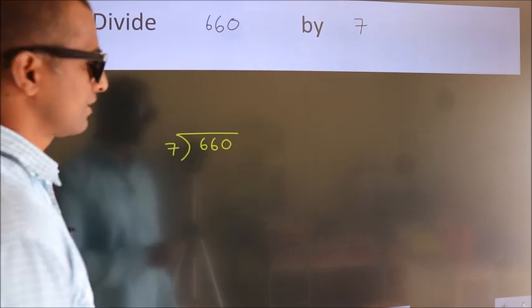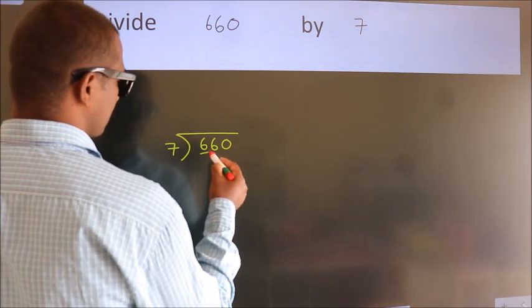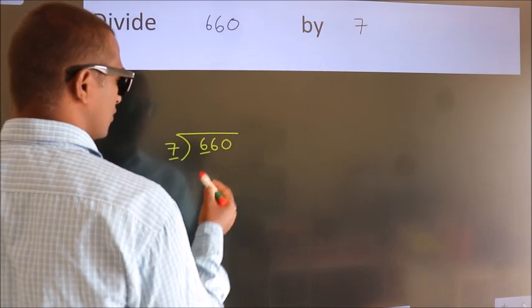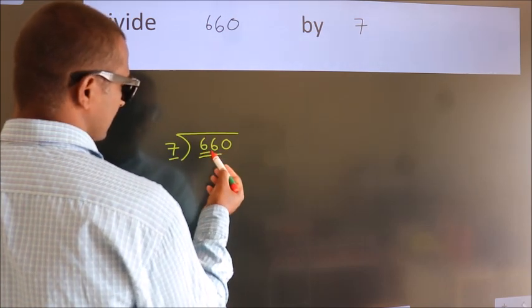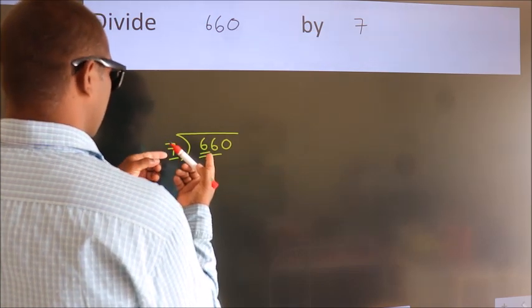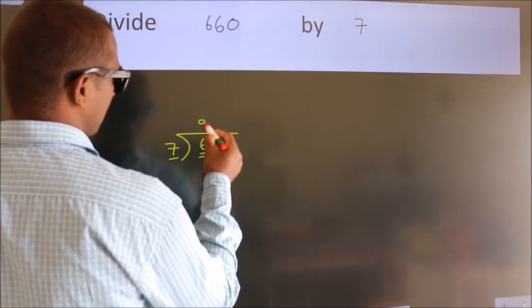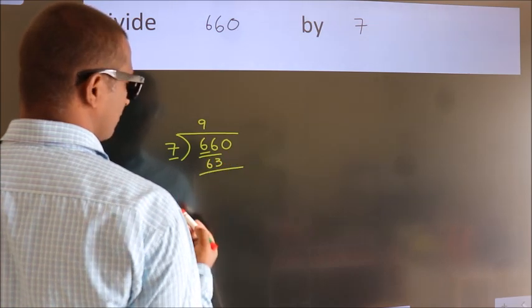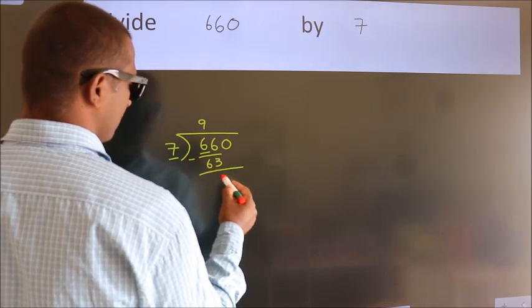Next. Here we have 6, here 7. 6 smaller than 7. So we should take 2 numbers, 66. A number close to 66 in 7 table is 7 nines, 63. Now, we should subtract. We get 3.